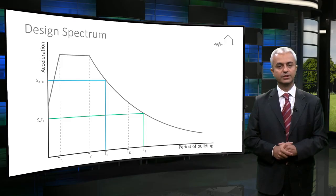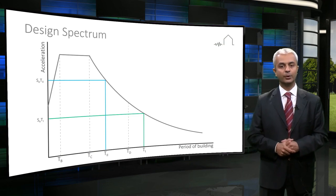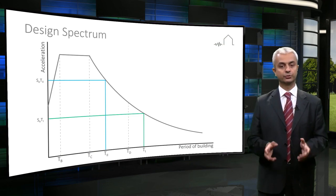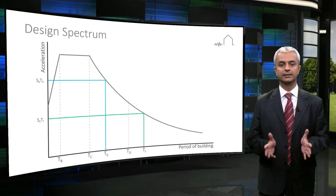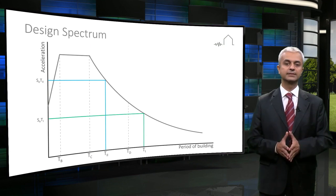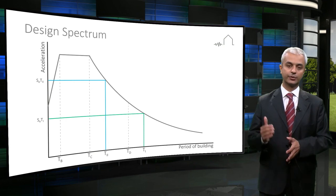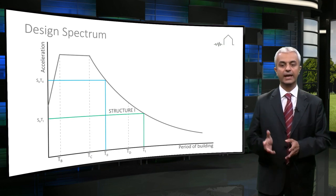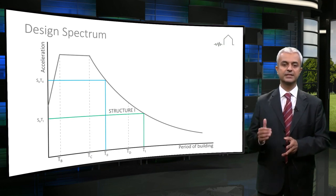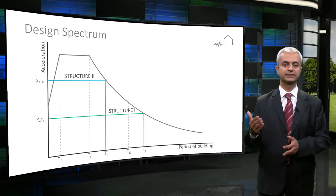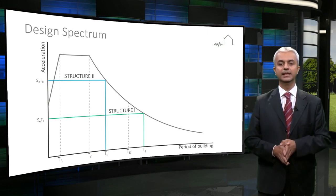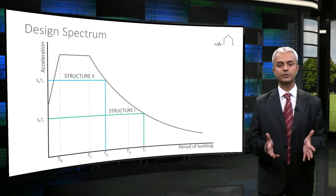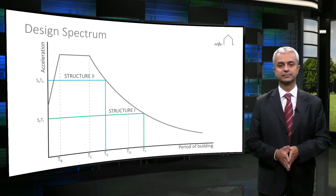When designing structures using design codes, the most widely used methods refer to the response spectrum. The lateral forces are calculated by selecting the spectral acceleration value that corresponds with the natural period of the structure being designed. As you can see in the graph, SE(T1) is the design spectral acceleration for the structure with the period T1. This was a brief introduction to response and design spectrums. Next session will be on analysis methods. Thank you.